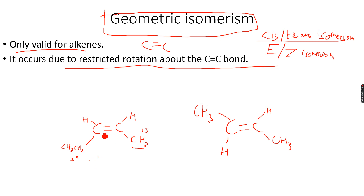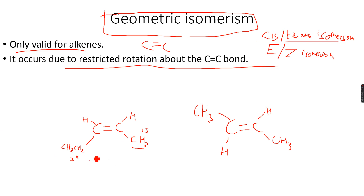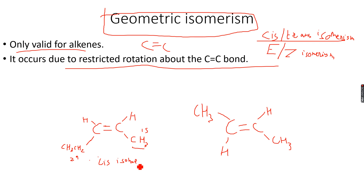When I have the low molecular masses on one side and the high molecular masses on the other side, then it's the cis isomer — the low groups on one side and the high molecular mass groups on the other side. That's the cis isomer.